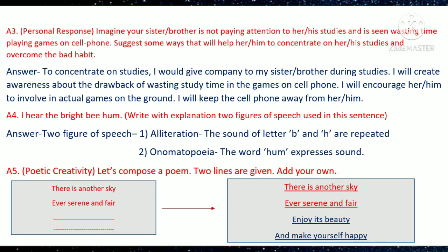Question A4: 'I hear the bright bee hum.' Write the two figures of speech used in this sentence. The first figure of speech is alliteration — the sound of letters B and H are repeated, that is why alliteration is used here. The second figure of speech is onomatopoeia — the word 'hum' expresses a sound.